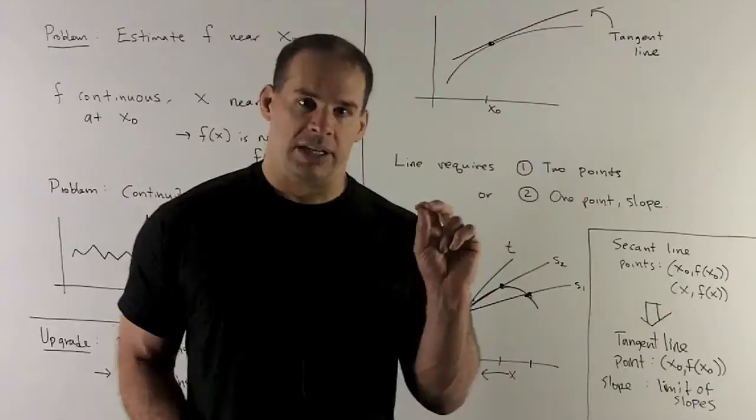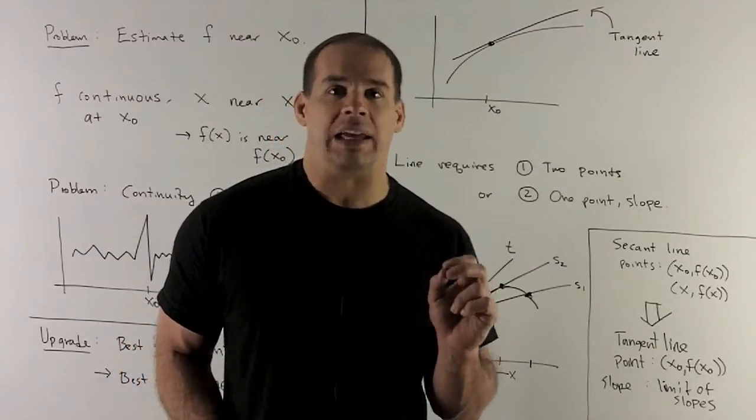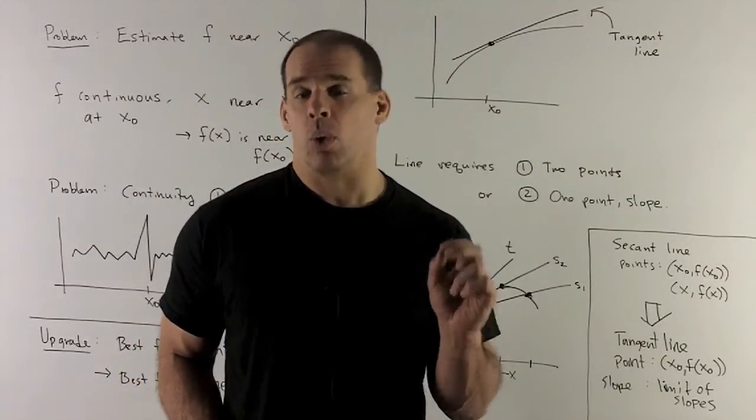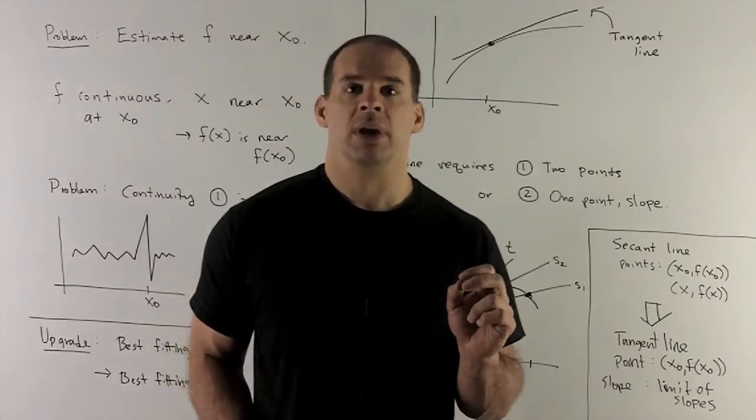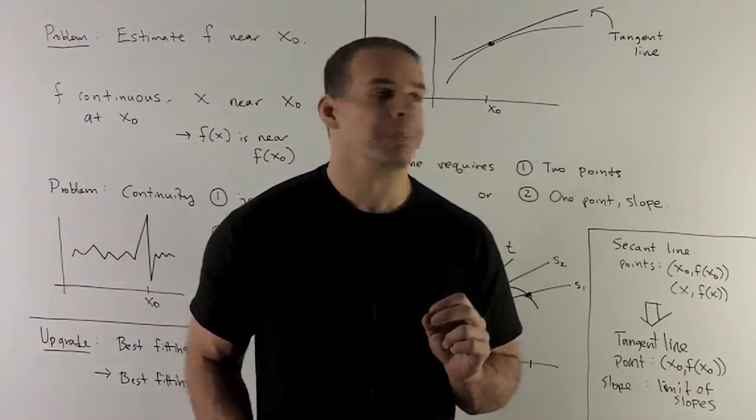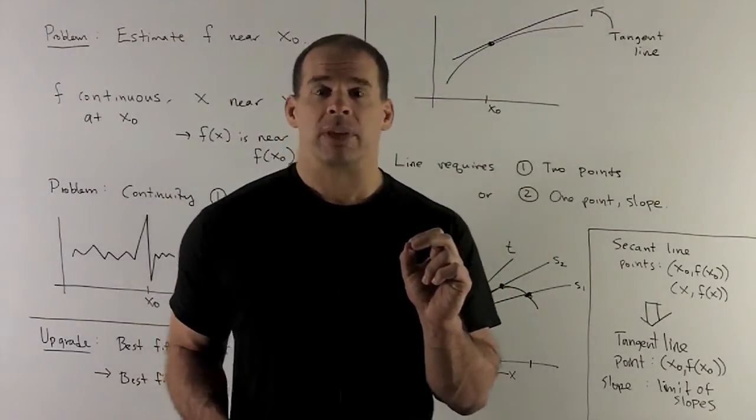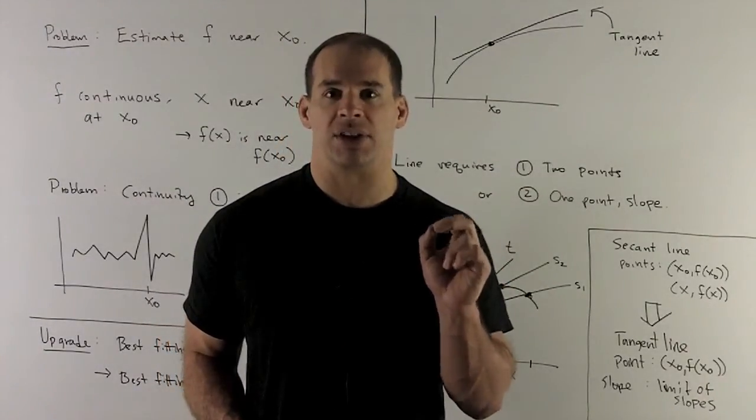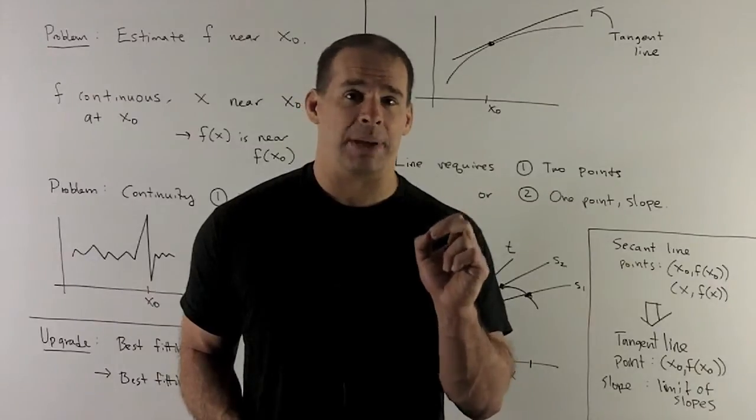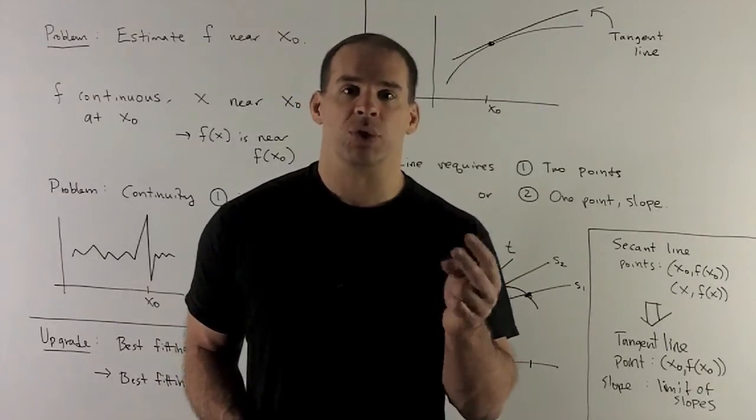What do I need to get a line? Well, I need two things for the recipe of a line. I'm either going to need two points, or I'm going to need a point and a slope. So how we're going to proceed is I'm going to start with x0 as one of my points, and then we're going to look at points very close to x0, and then see what's happening on the graph.